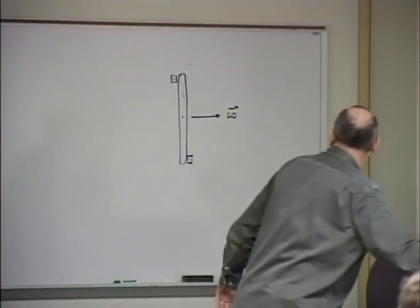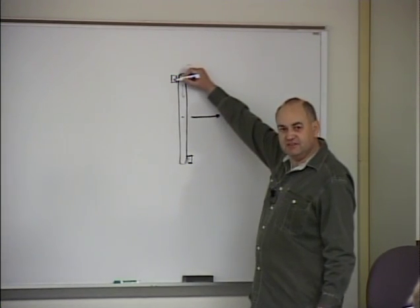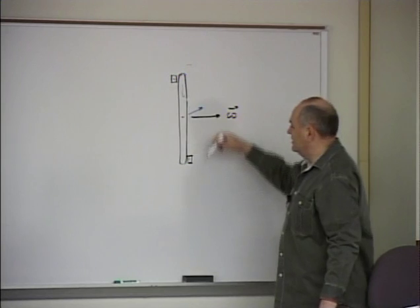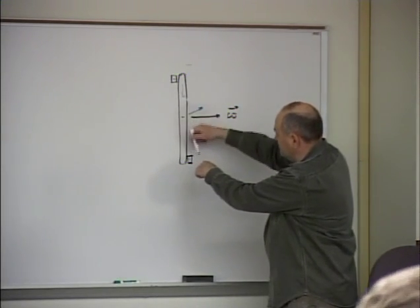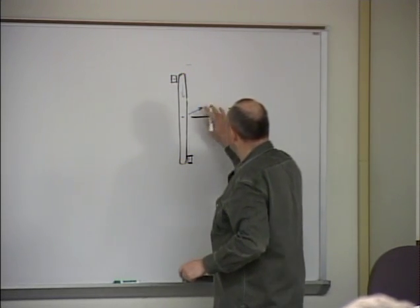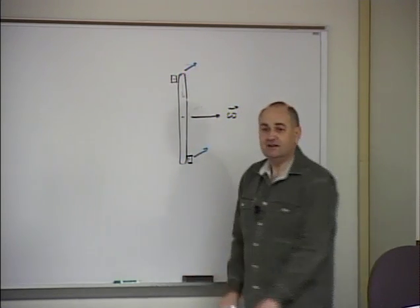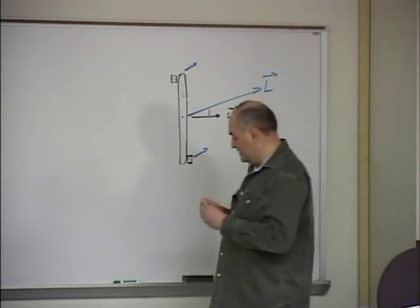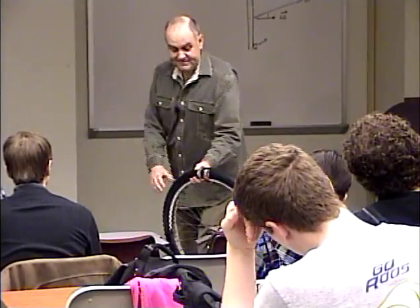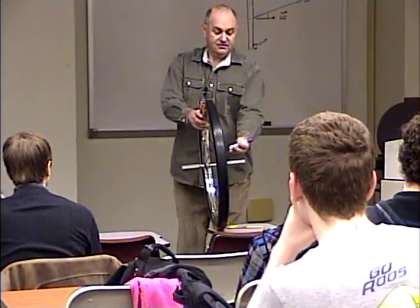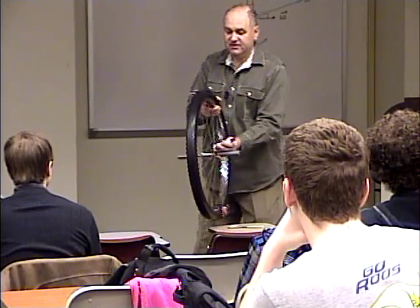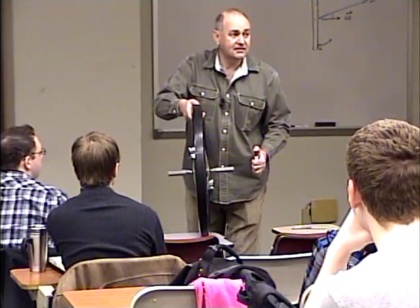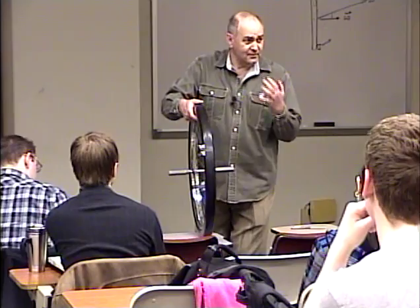How about angular momentum? The contribution of this piece: position vector is like that, momentum is like that, so it is slightly upward. For this one, momentum is in, position is here — also like that. So now angular momentum of the wheel is not parallel to the axis. Consistently with this drawing, angular momentum is going to be tilted like that. As the wheel turns, angular momentum moves along a cone. Angular momentum is not constant anymore, even when angular velocity is constant.